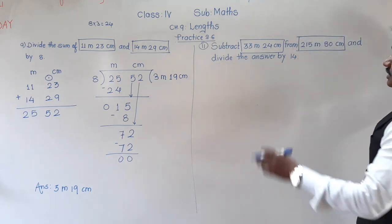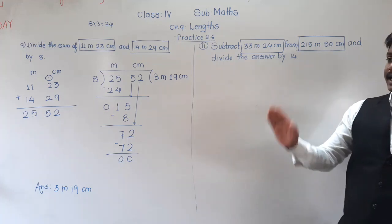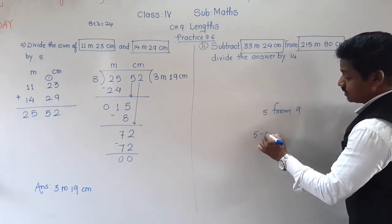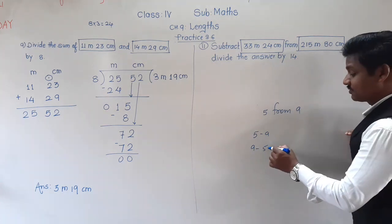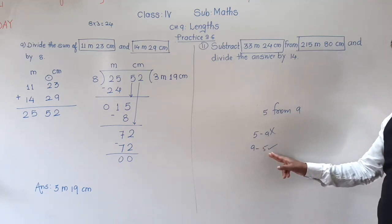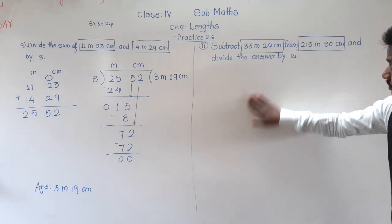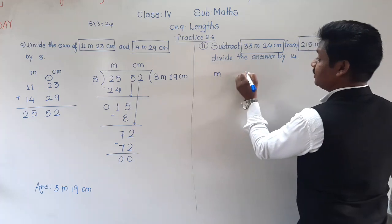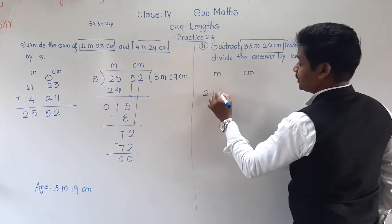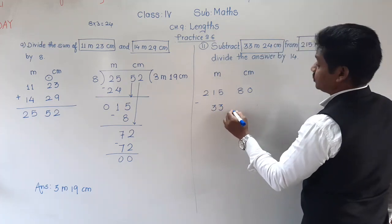Read the question very carefully. We subtract this length from this length. When we say subtract 5 from 9, we write 9 minus 5, not 5 minus 9. Similarly here, this length is greater and it will come on top because from this length we have to subtract the other. So when arranged in columns: 215 meter 80 centimeter on top, minus 33 meter 24 centimeter below.